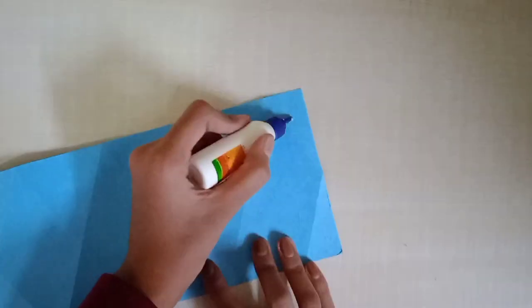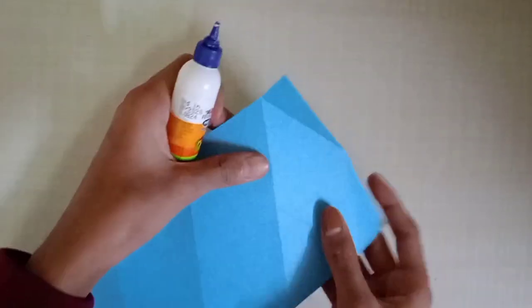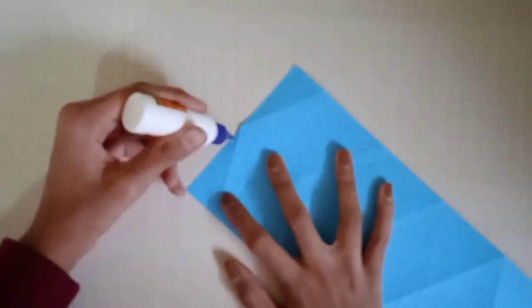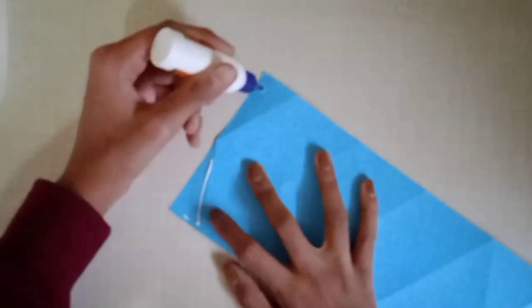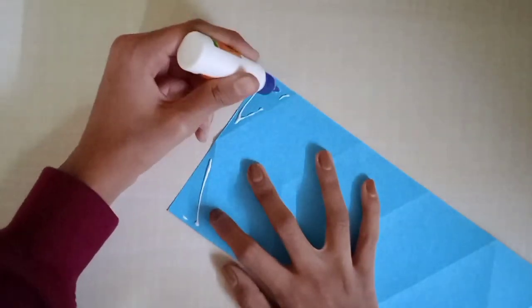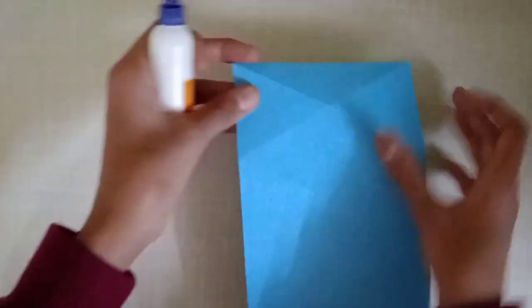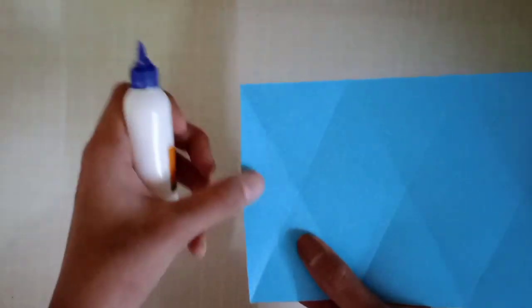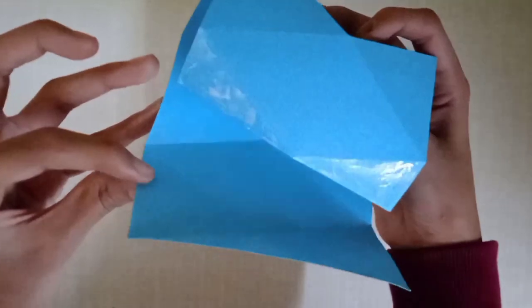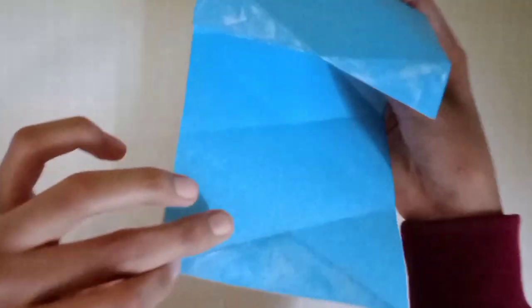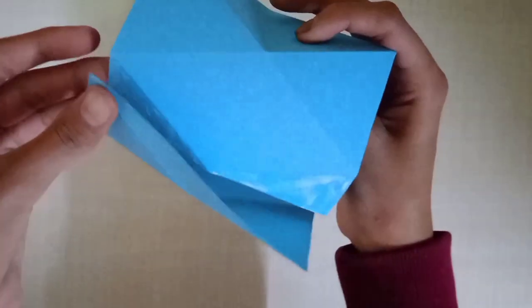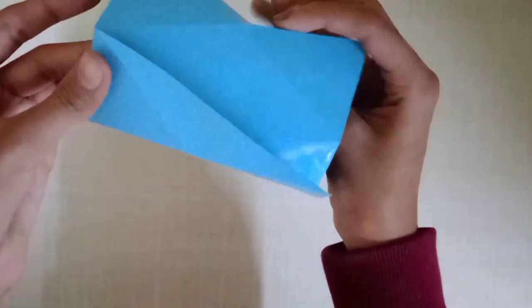Then take some glue or you can even go with glue stick. And the portion here we are having two small triangles, I'll apply glue outside and the portion we are having a big triangle, I'm gonna be applying glue inside. Spread the glue and stick both of the ends together. Match each point with each and do it nicely.